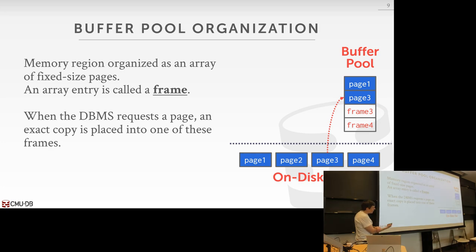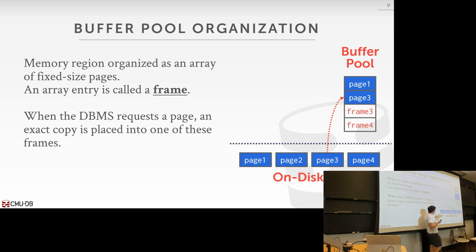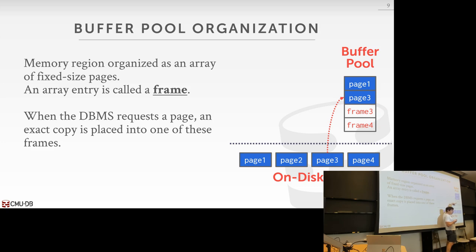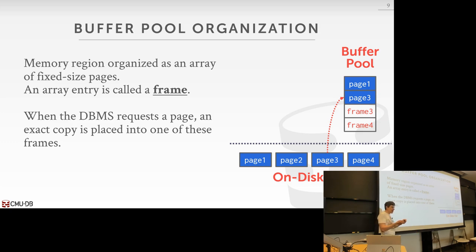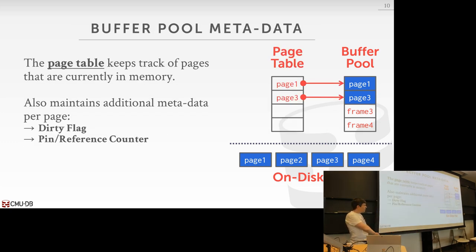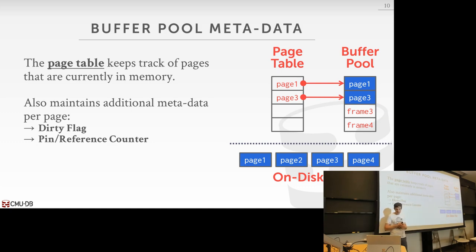Pages can go in any order in the frames — the buffer pool order won't match disk order. So we need an extra indirection layer: the page table. The page table is a hash table that keeps track of what pages we have in memory — if you ask for a particular page ID, it tells you what frame it's located in. The database system also maintains metadata: first, a dirty flag — a single bit telling us whether the page has been modified since it was read from disk. Second, a pin counter or reference counter, tracking how many threads or queries want this page to remain in memory.